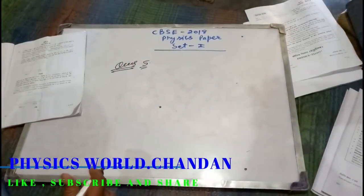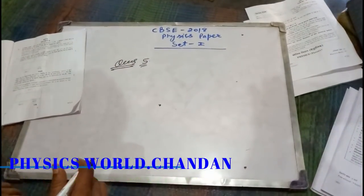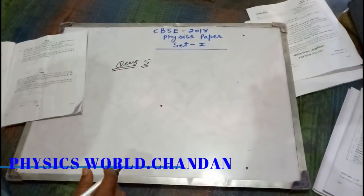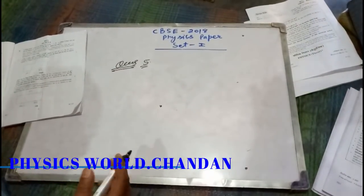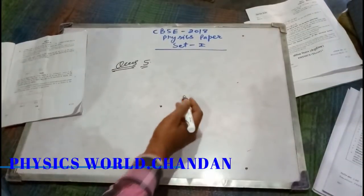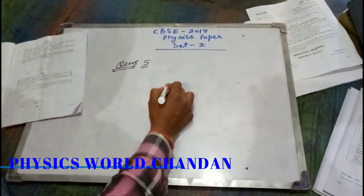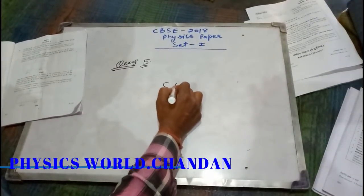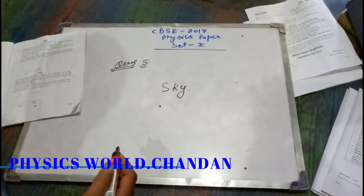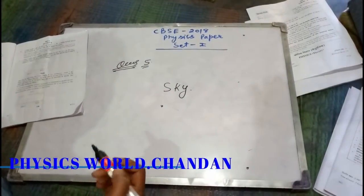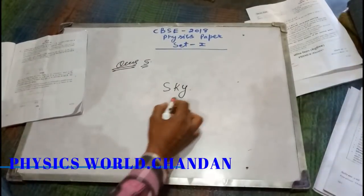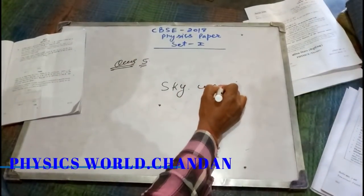Question number five: which mode of propagation is used for short wave broadcast service? Short wave ki jo frequency range hai, woh aati hai sky wave propagation ki range mein. Isliye short wave broadcast service ke liye jo use hoga — mode of propagation — that is sky wave propagation.